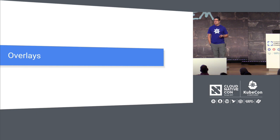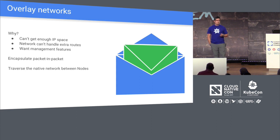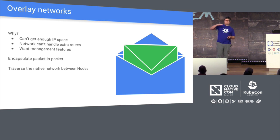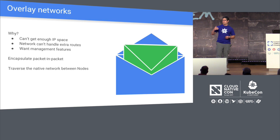Overlays are a level of complexity one can employ to solve some problems. An overlay network is basically an L2 network built upon the network you already have. Why would you want to build another layer of complexity on top? One reason is maybe you don't have enough IP space for all the pods. Another is maybe the network can't handle all the routes you want between nodes. With overlays you can make life easier for application developers based on the constraints of the network around you — by encapsulating the packet in a packet.